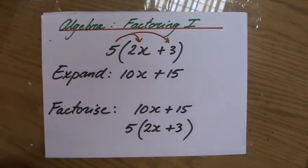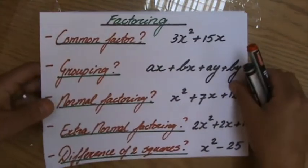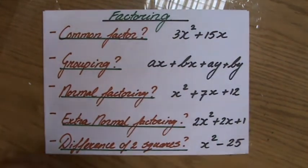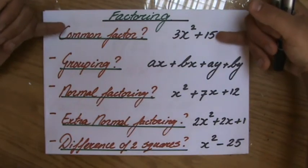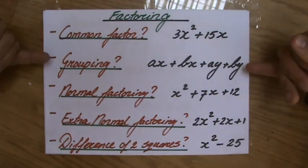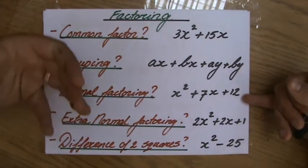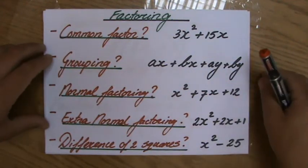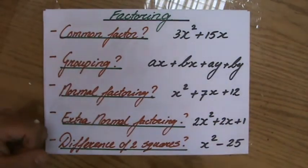I will be referring to this particular sheet during my playlist on several occasions because these are the questions you have to ask yourself. Am I factorizing by taking out a common factor? Is it grouping?